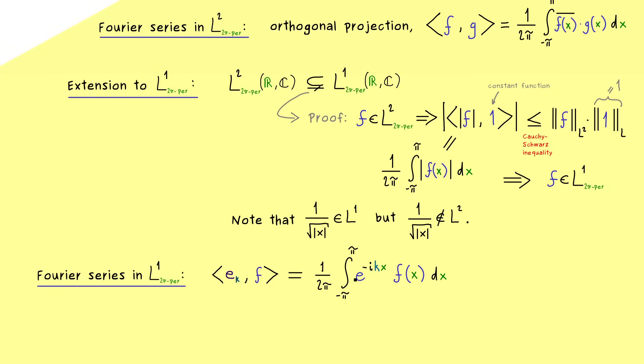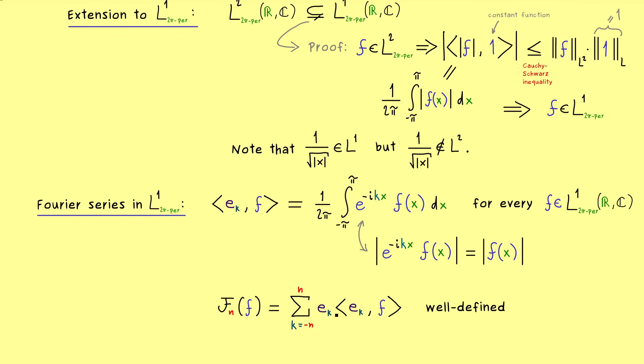And this integral just always exists for any L1 function simply because the absolute value of the function inside is equal to the absolute value of f. This is quite clear because the exponential function has a modulus of 1. Hence the Fourier coefficients are always well defined no matter which L1 function we choose. And this also implies that the Fourier series is well defined as well.